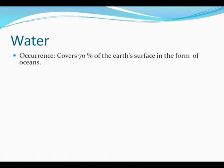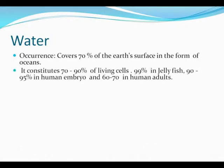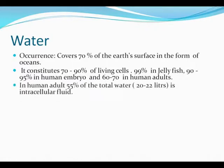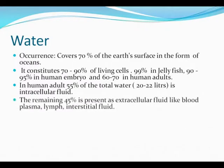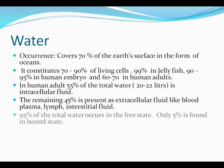Water covers 70 percent of the earth's surface. It constitutes 70 to 90 percent of living cells, 99 percent in jellyfish, and 90 to 95 percent in a human embryo, and around 60 to 70 percent in human adults. The intracellular fluid in human adults contains around 55 percent water, while the remaining 45 percent is present as extracellular fluid like blood plasma, lymph, and interstitial fluid. 95 percent of the total water occurs in the free state and only five percent is in the bound state.